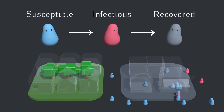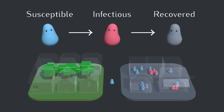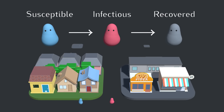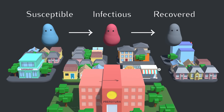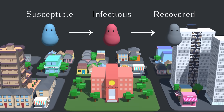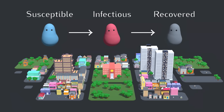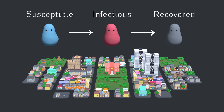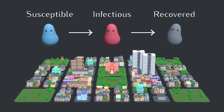In this model, recovered blobs are permanently immune. This is called an SIR model. This is obviously a lot simpler than real life, so we're not going to try to make any specific predictions about COVID-19. But the goal here is to get a feel for the overall patterns of disease spread, so this should do the trick.